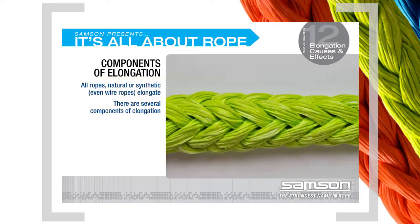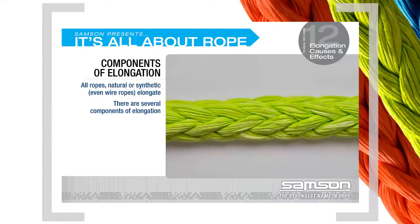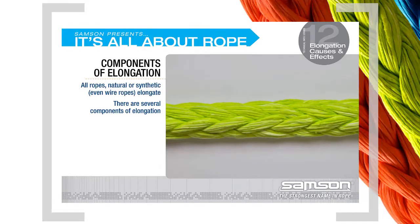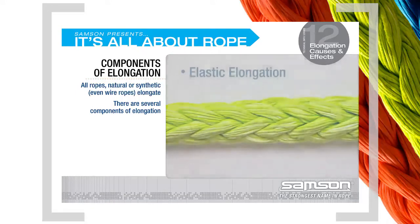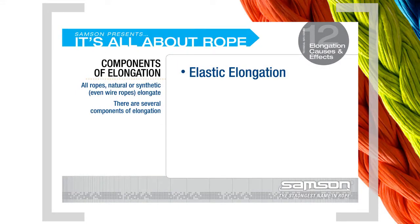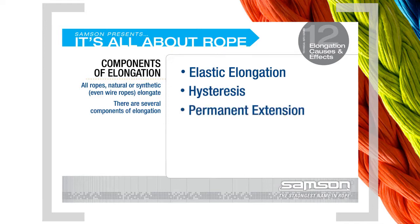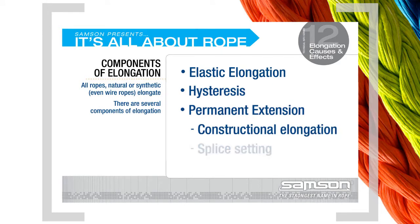All ropes — whether made from natural or synthetic fibers, even wire ropes — elongate to some extent when put into service. There are several components of elongation, and we'll discuss each of them in turn: elastic elongation, hysteresis, permanent extension, constructional elongation, splice setting, and the role creep plays in permanent elongation.